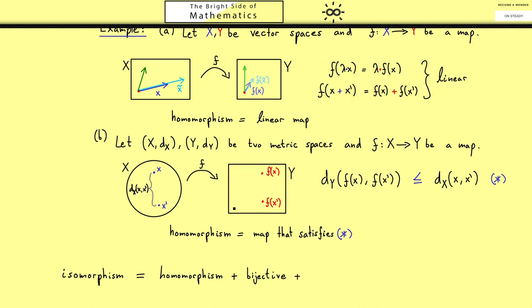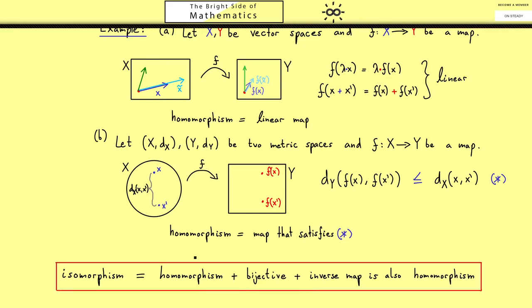But then in this case it's only natural to demand that the inverse function from right to left also preserves the structure. This means that the inverse map is also a homomorphism. And with this we have the whole definition of an isomorphism. Please always remember this.